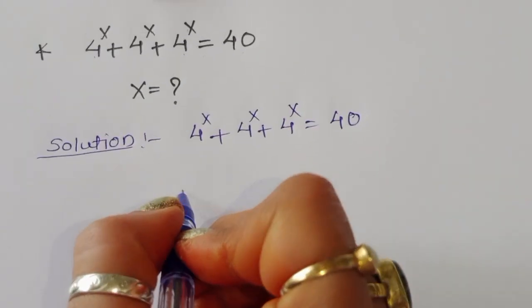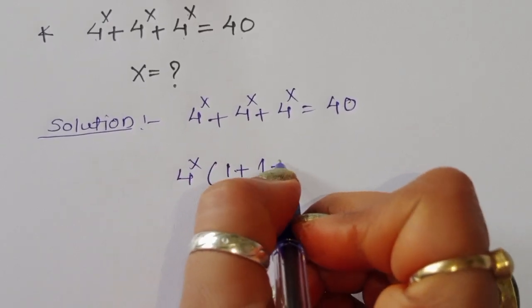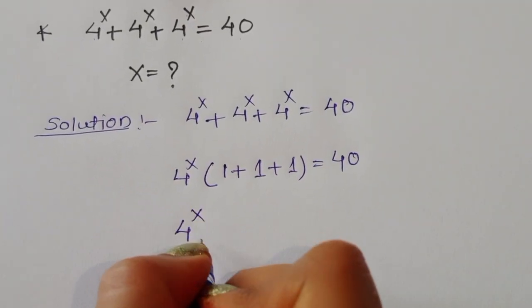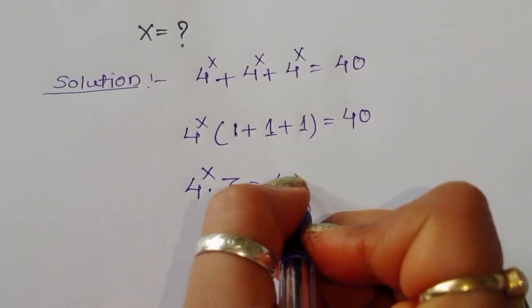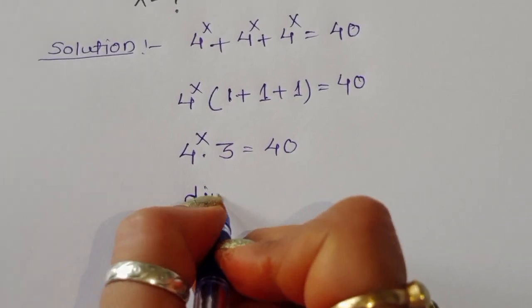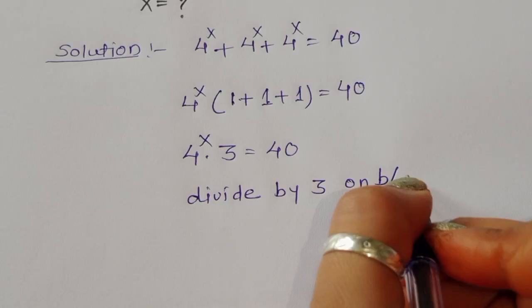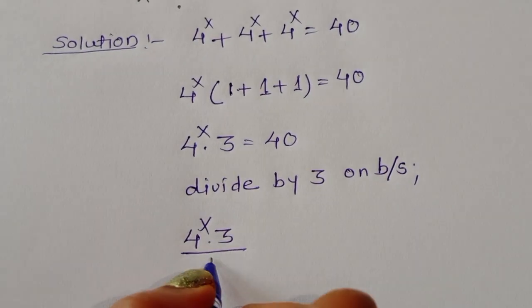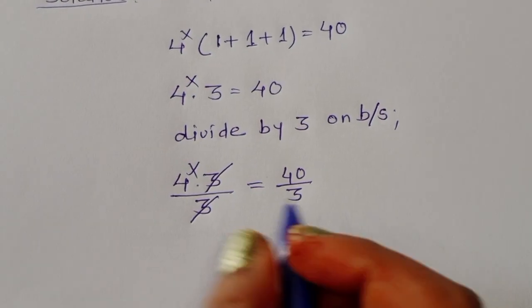We can take 4^x as a common factor. So we write 4^x times (1 + 1 + 1) = 40. Now 4^x times 3 = 40. To remove the 3, we divide both sides by 3.